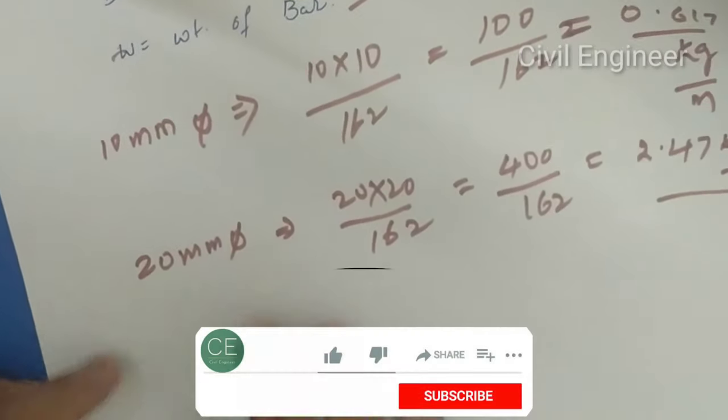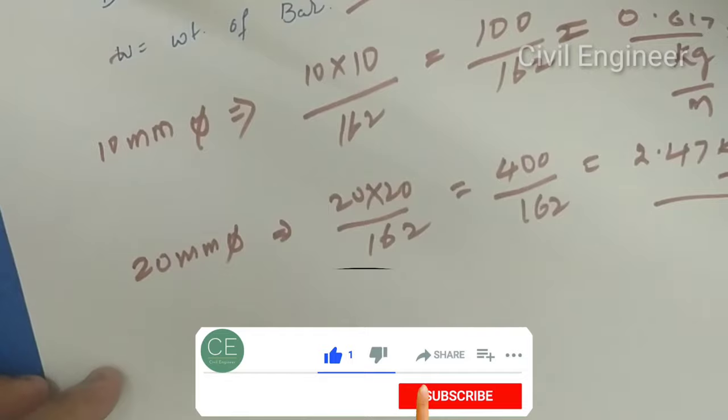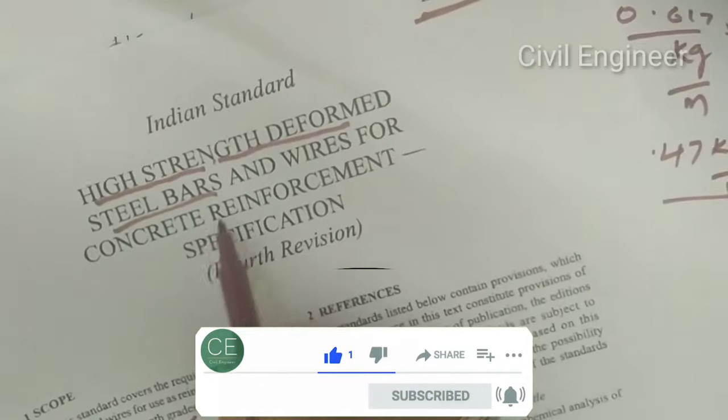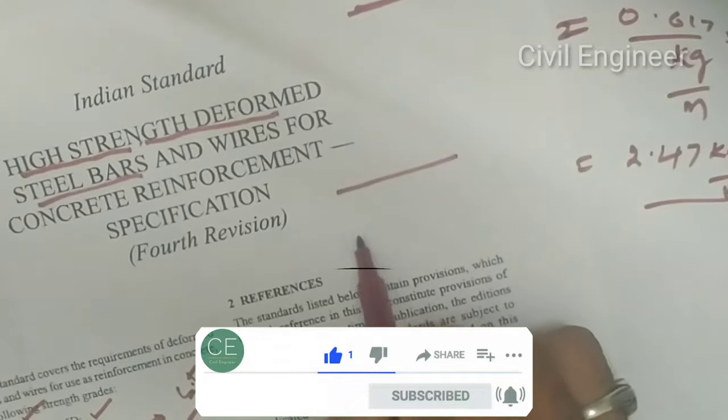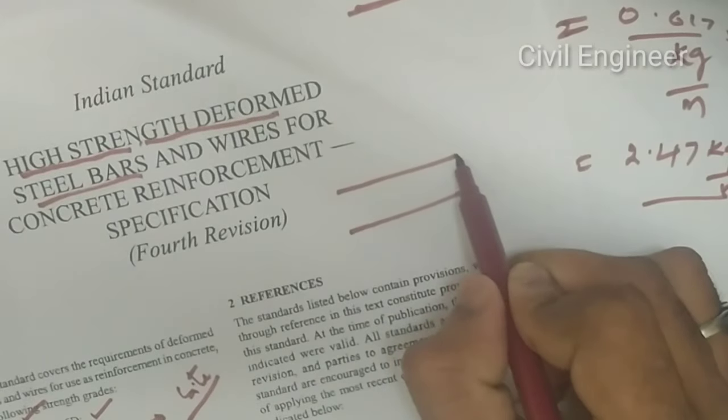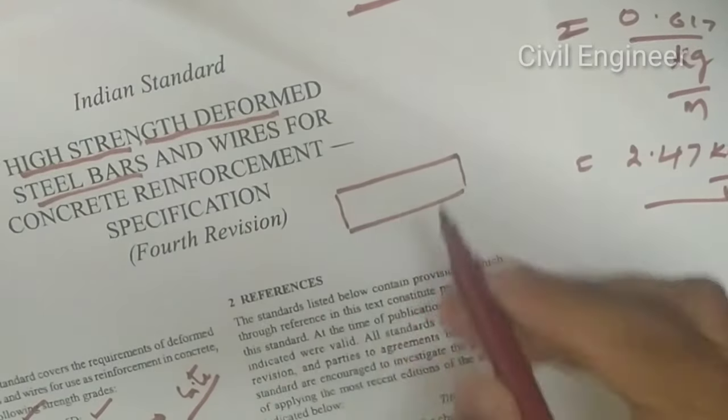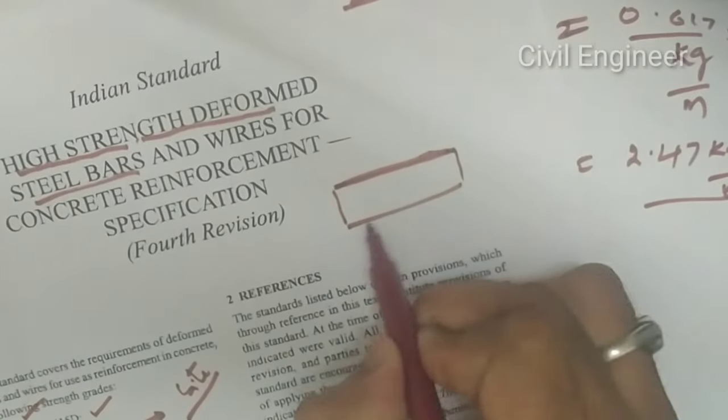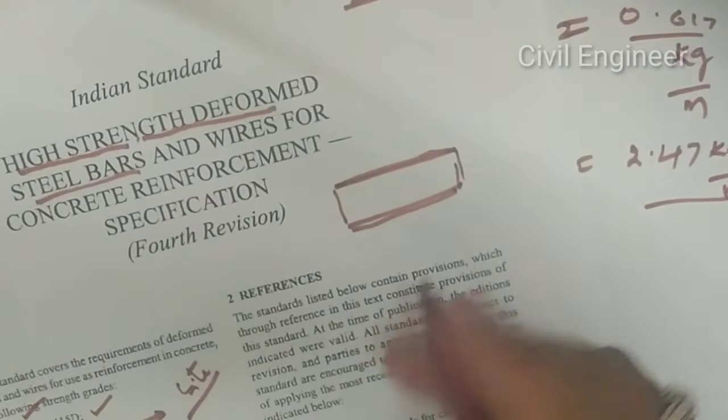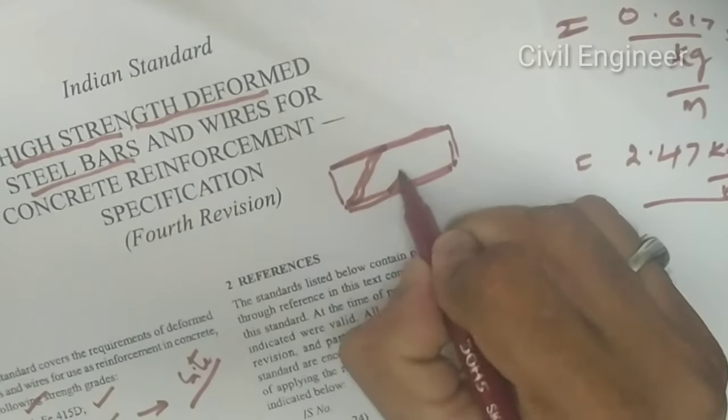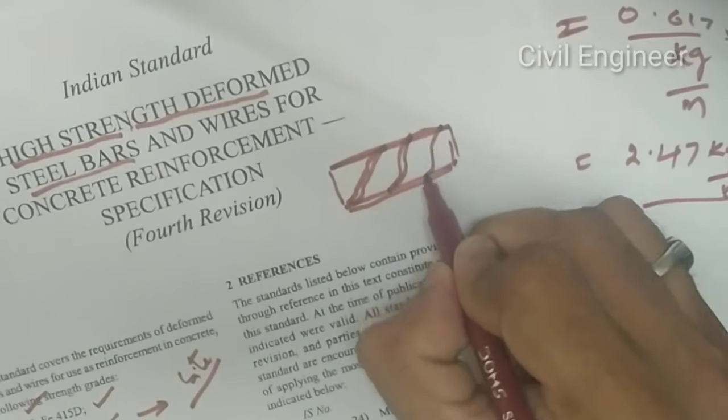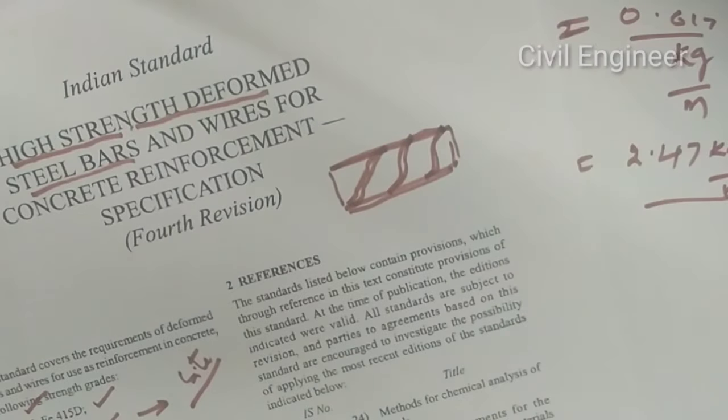What we choose are the deformed bars. These are high-strength deformed steel bars. We choose a steel bar, not a plain bar. This is a normal bar. If you choose a bar with a grip type, these bars are the high-strength deformed bars.